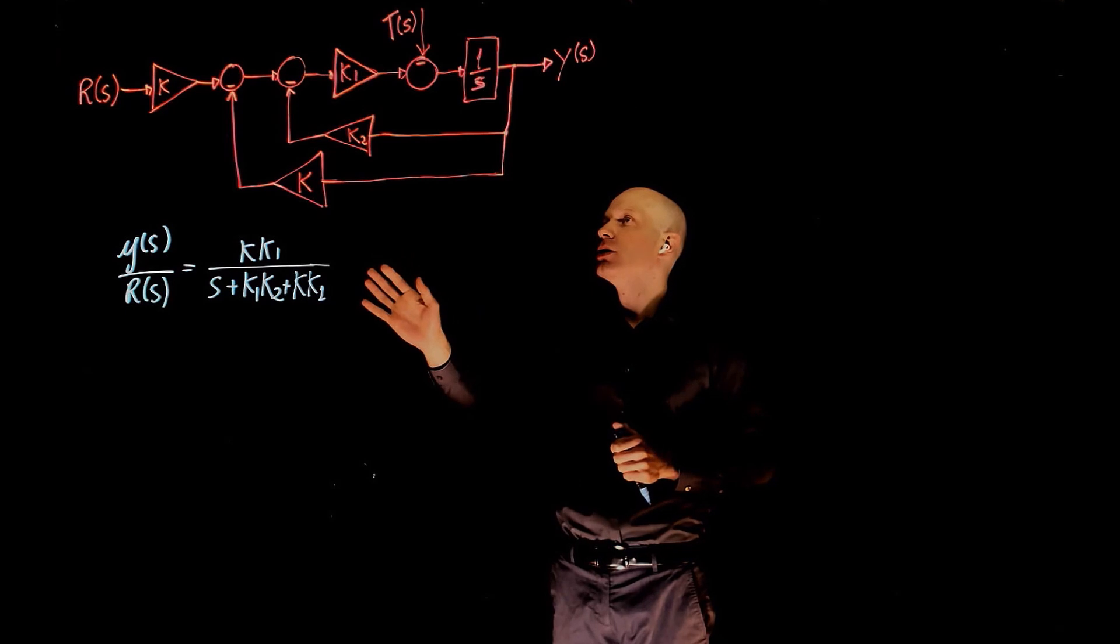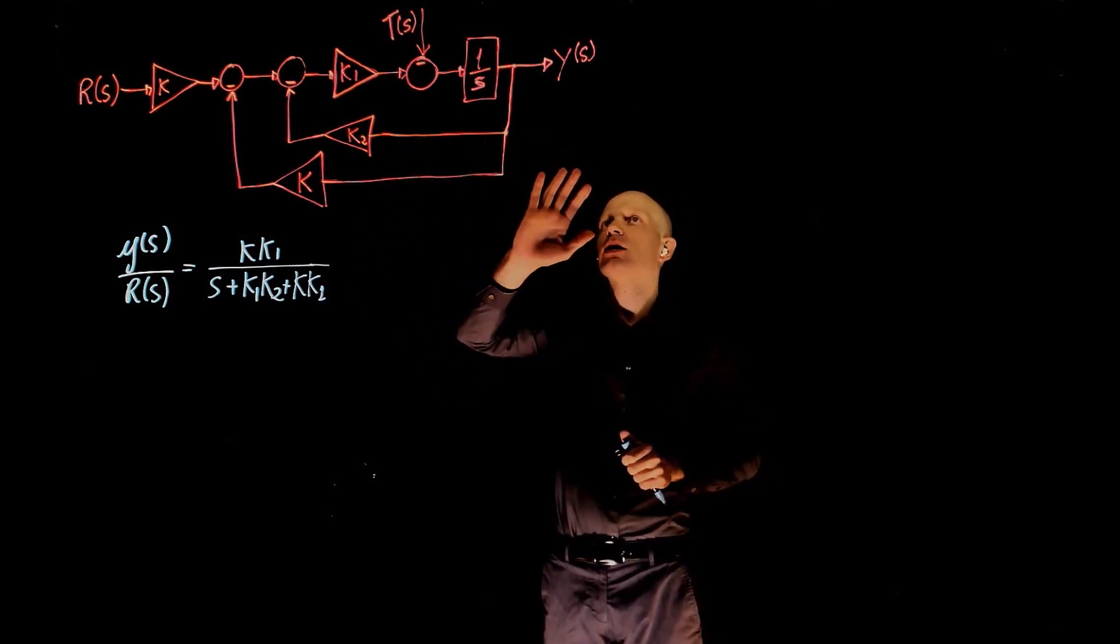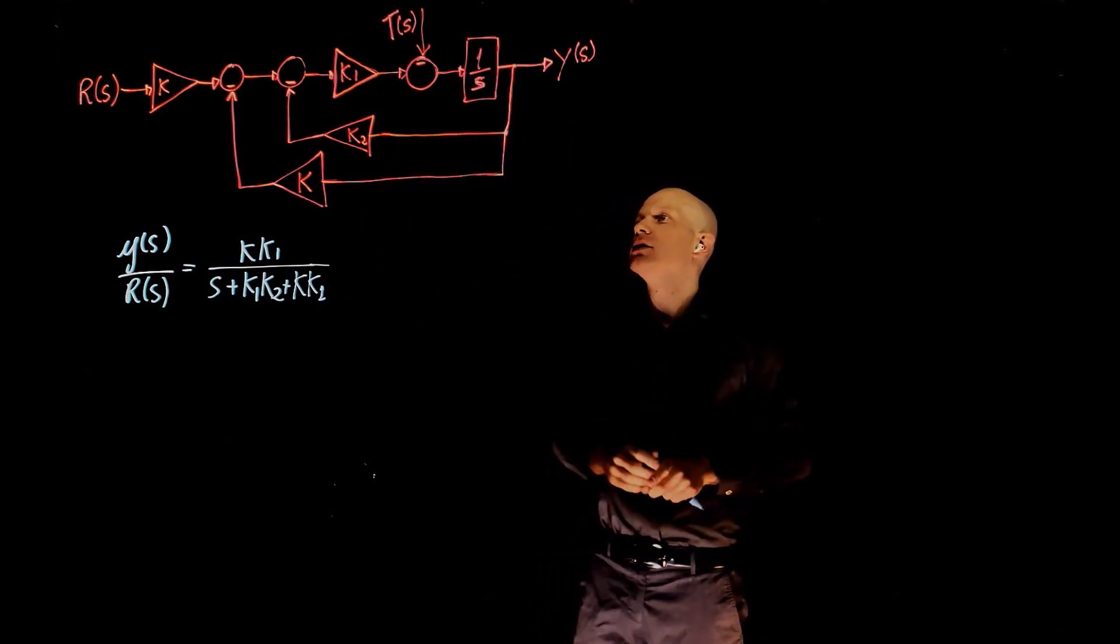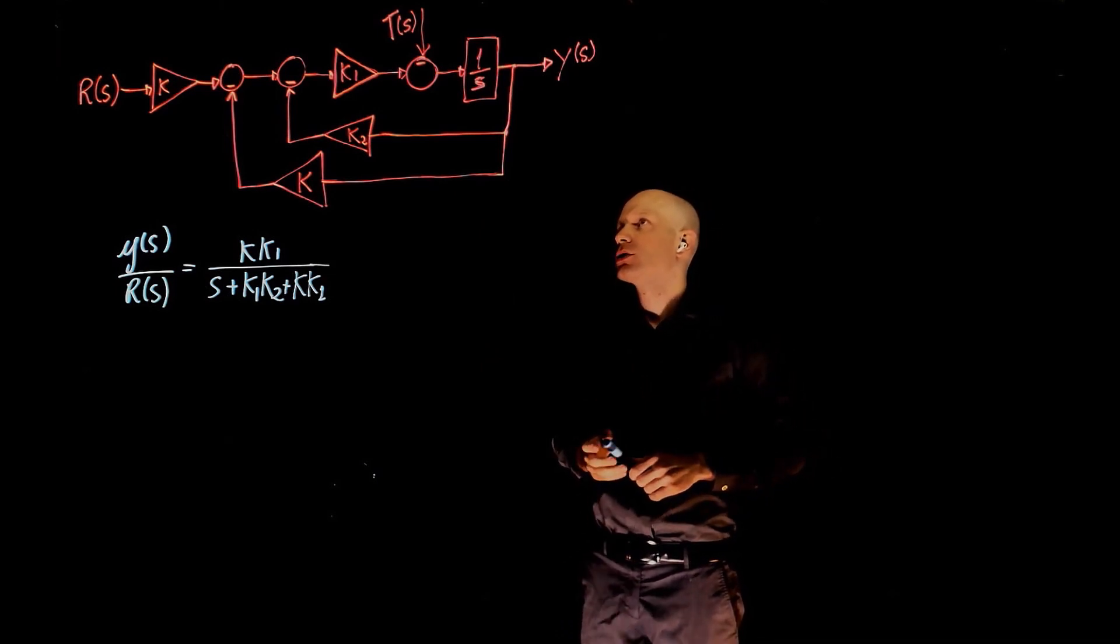If you set r to zero, we need to rearrange this block diagram and now find the transfer function between y and t. So let's do that.